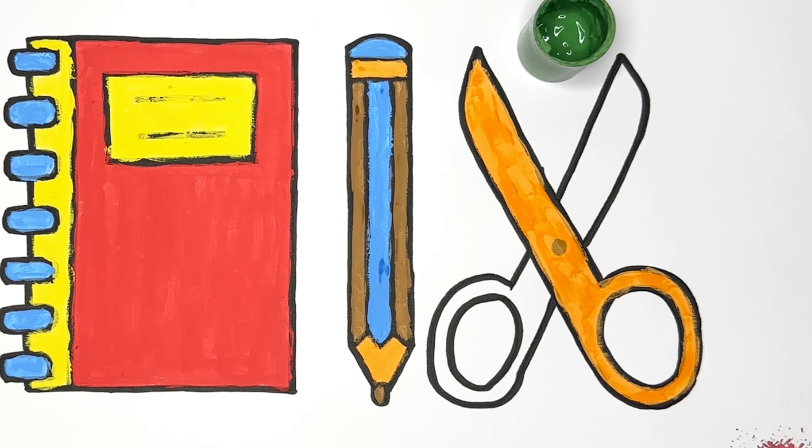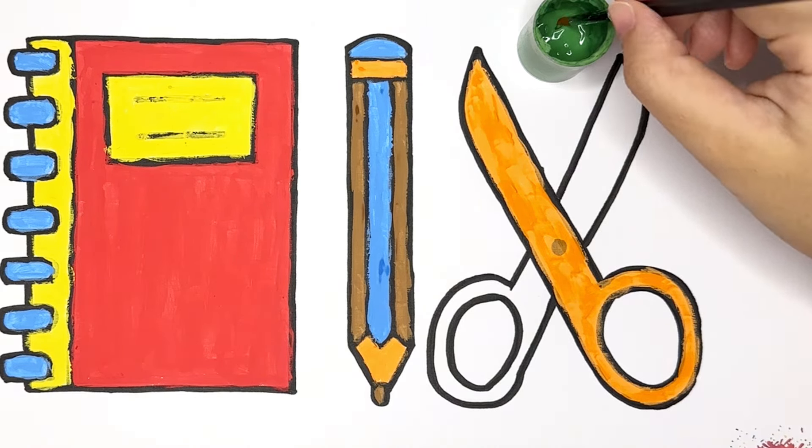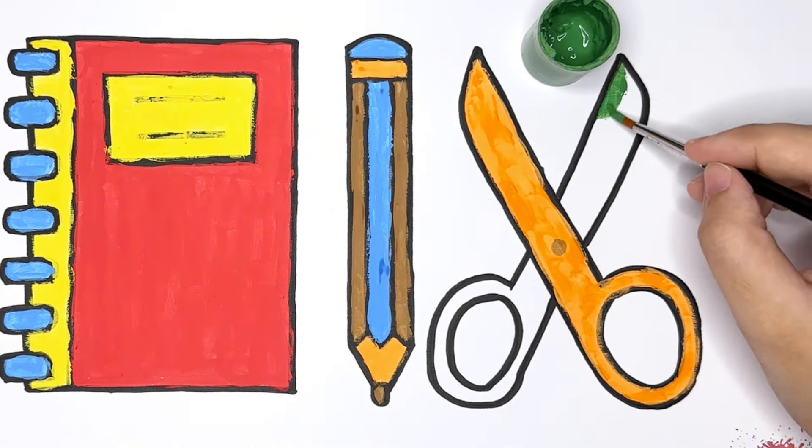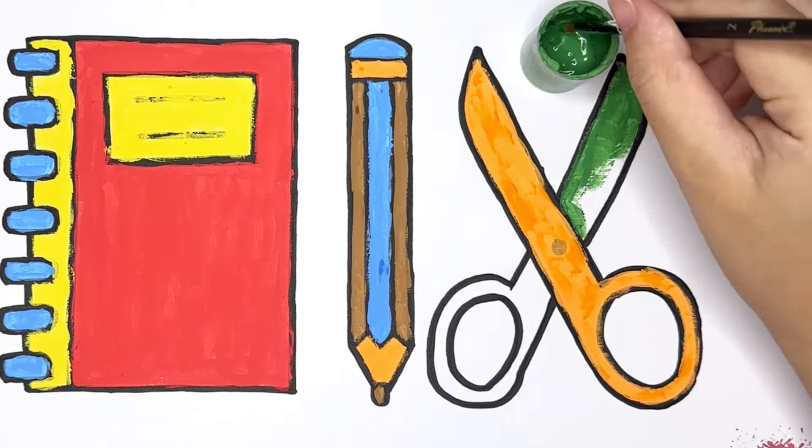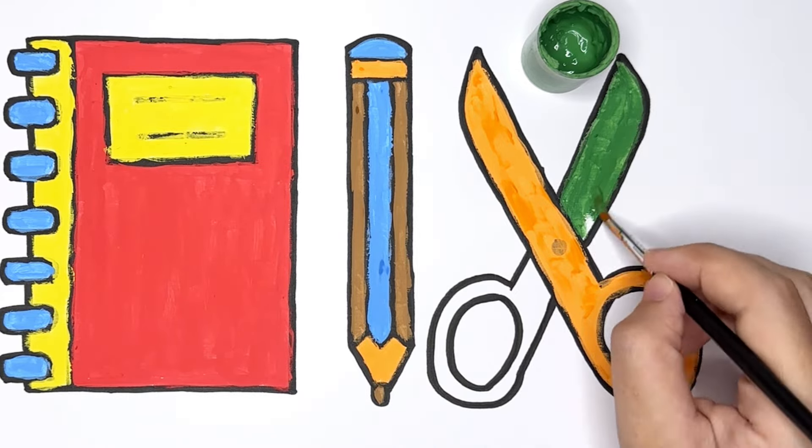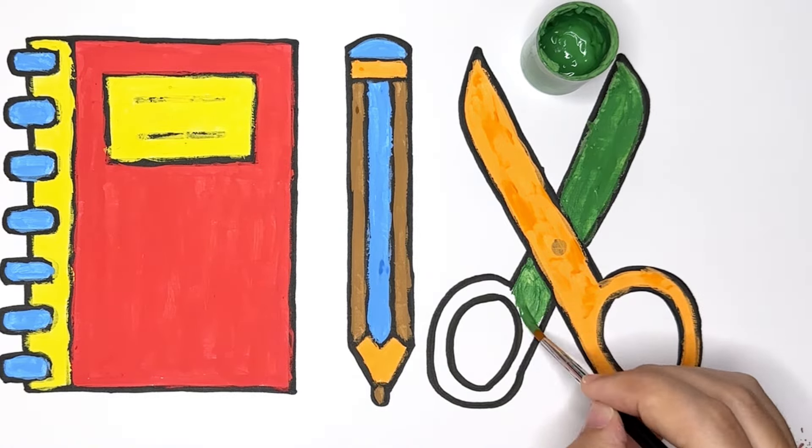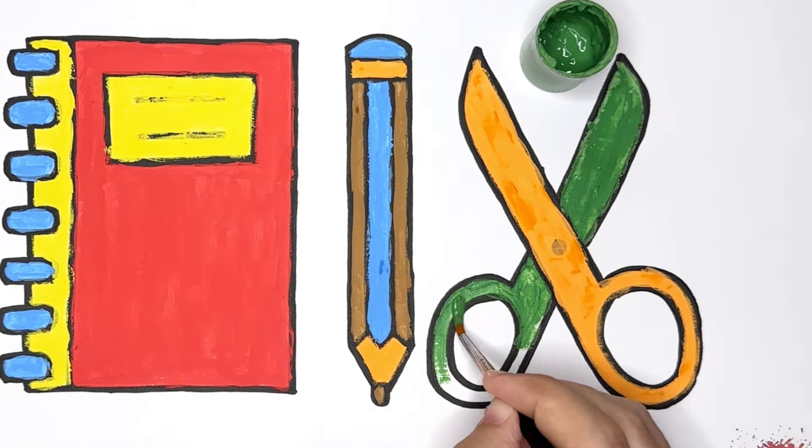Green. Make our scissors stand out by giving them a cool green makeover. Green is such a lively and fresh color, just like the grass and leaves.